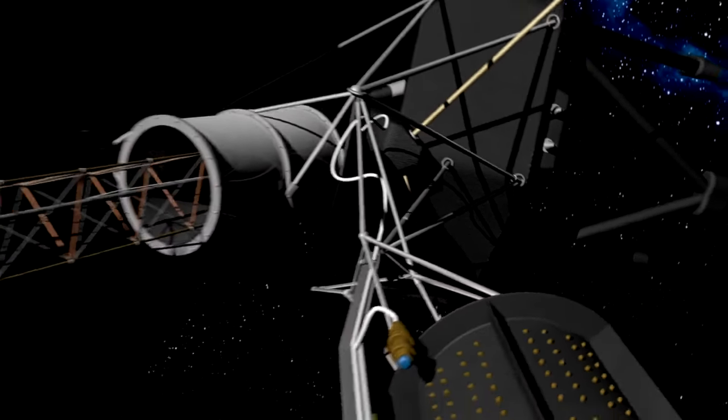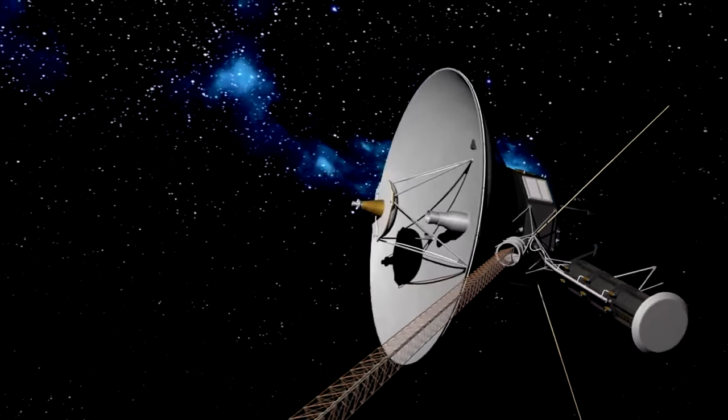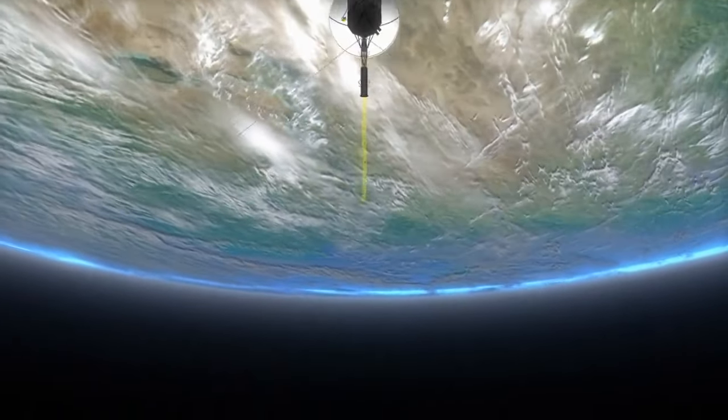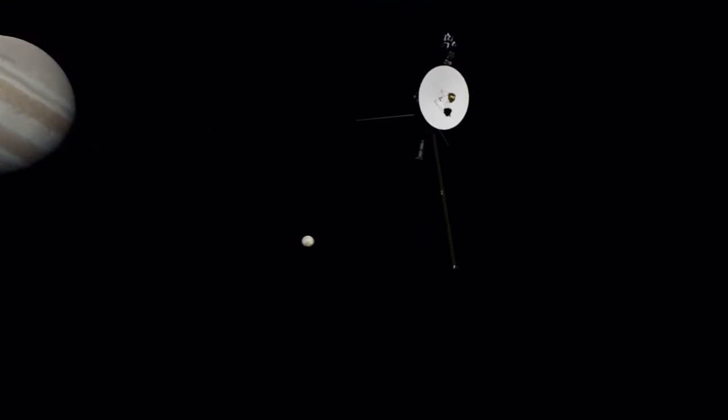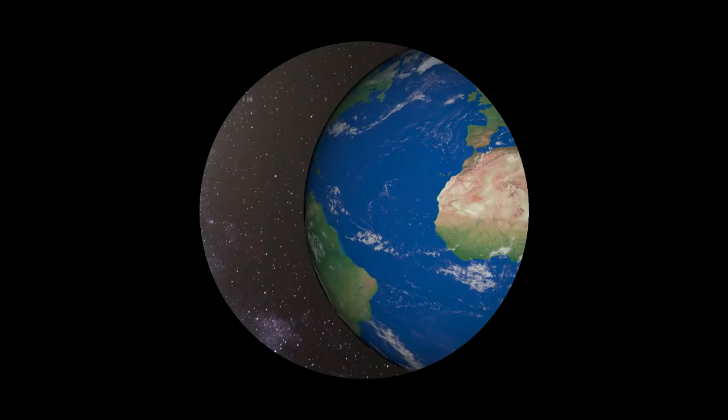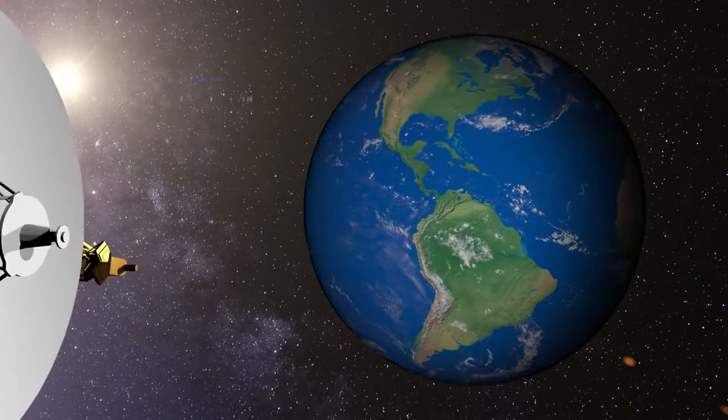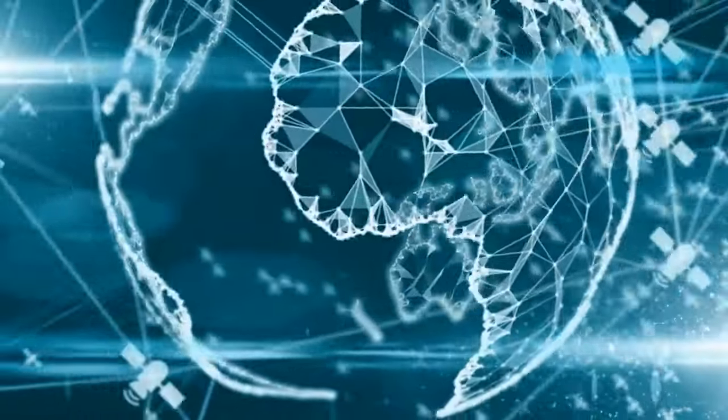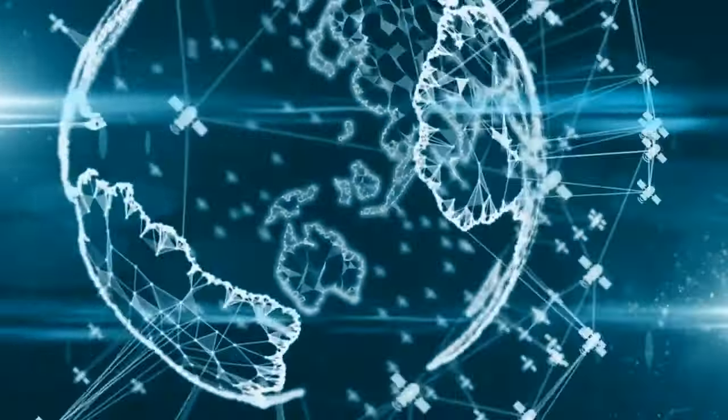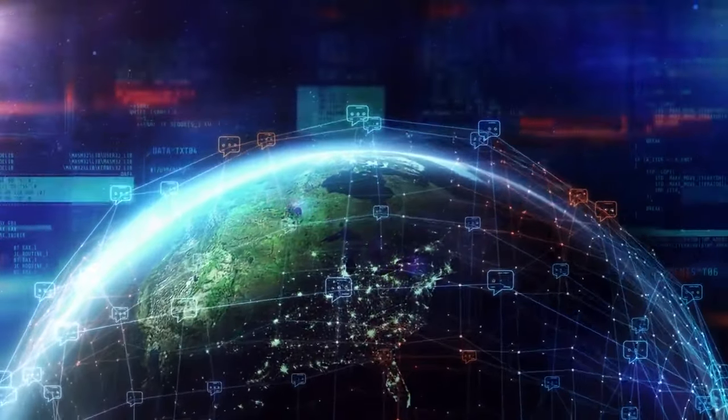This region, known as interstellar space, had never been directly explored by any spacecraft before, making Voyager 1's journey a groundbreaking scientific achievement. Despite being over 15 billion miles away from Earth, a distance so immense that it takes light more than 20 hours to travel from Voyager 1 to us, this resilient probe continues to communicate with our planet. It sends back faint but steady signals packed with invaluable data that scientists eagerly analyze to gain insights into this mysterious part of the cosmos.